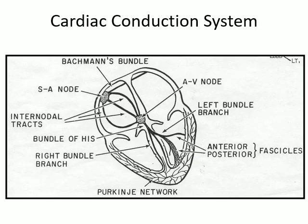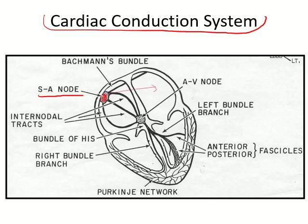Let's begin by talking about the cardiac conduction system. Under normal circumstances, the current originates in the SA node. From the SA node it spreads throughout the atria and through the internodal tracts it goes to the AV node. In the AV node there occurs something called AV nodal delay — a slowing of conduction — which ensures that the atria depolarize prior to the ventricles.